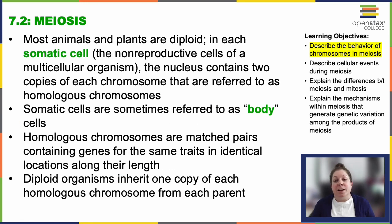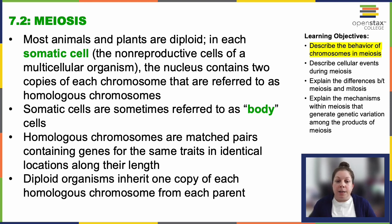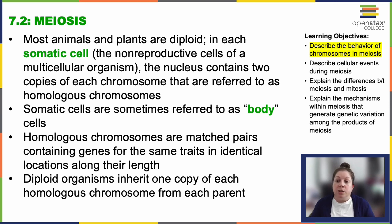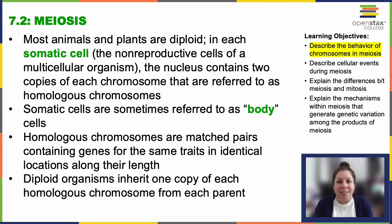The majority of animals and plants are diploid — they have two sets of chromosomes in their somatic cells, which are the non-reproductive cells. These cells contain homologous chromosomes: paired sets with genes for the same traits in identical positions along their length. Each set of homologous chromosomes is not identical — they're homologous, meaning very similar.